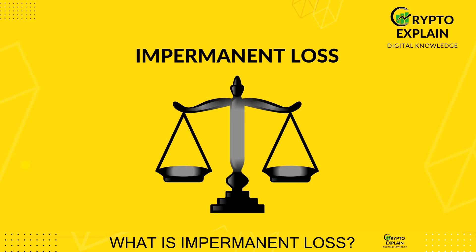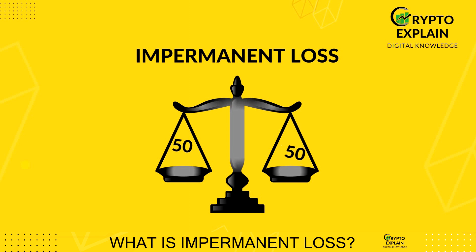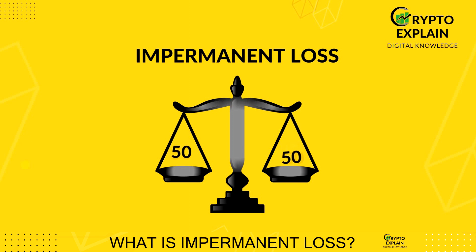Now let's talk about impermanent loss. This concept arises because a programmed mathematical algorithm manages the funds. When the value of the coin we've deposited increases by 200%, it doesn't mean we'll make the same profit. The gains will be substantial but less than 200%, because during the entire value increase, a portion of our appreciating Osmosis will be consistently sold for USDC to maintain the 50-50 balance. The same scenario occurs when the value of Osmo starts to decline. During a 50% decrease we'll also incur losses, but as our Osmosis depreciates, some USDC will be converted into Osmo tokens to preserve the balance, resulting in a loss less than 50%.